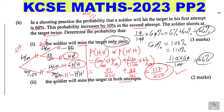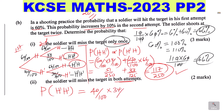The second part: the soldier will miss the target in both attempts. Missing in both attempts means the probability of not hitting then not hitting. That would be given by 40% times 34%. When you work it out and simplify, you get 17 over 125.